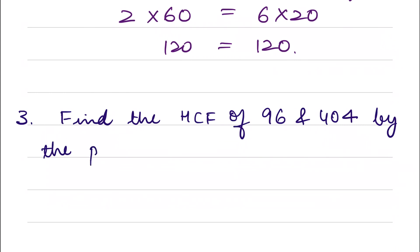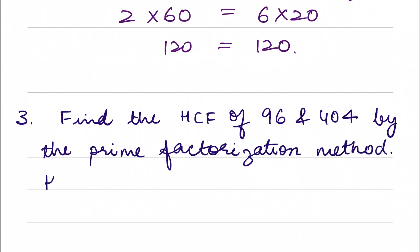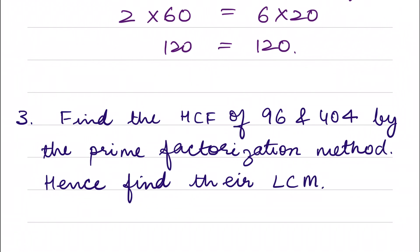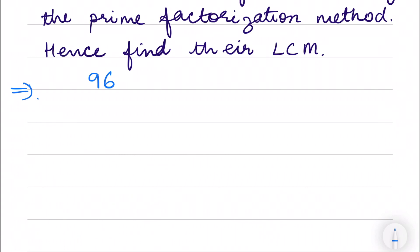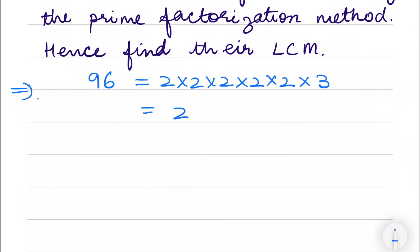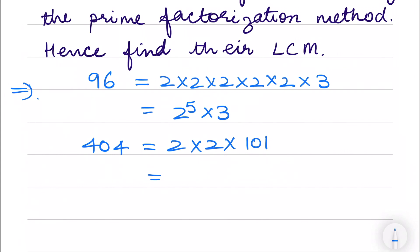Let's do one more example for LCM and HCF using the prime factorization method. Let's find the prime factors of 96 first. The factors of 96 would be 2 into 2 into 2 into 2 into 2 into 3, which I can write as 2 raised to the power 5 into 3. The prime factors for 404 will be 2 into 2 into 101, which I can write as 2 raised to the power 2 into 101.